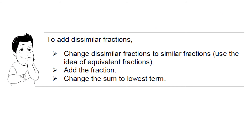Based on our examples, how do we add dissimilar fractions? Dissimilar fractions are fractions with different denominators. First, change dissimilar fractions to similar fractions using the idea of equivalent fractions — find the LCD. Then add the fractions once they have the same denominator. Finally, change the sum to its lowest term by finding any number that can divide both numerator and denominator.